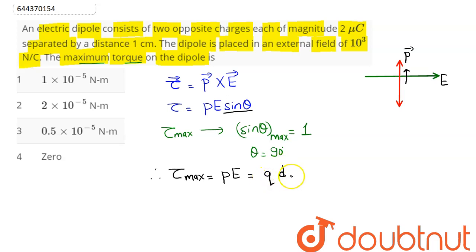Now substituting the values here, q is given as 2 micro coulombs, so value of q is 2 × 10^-6. Distance between the charges is 1 centimeter, so this is 10^-2 meter. Electric field is given as 10^3, so this here is 10^3.